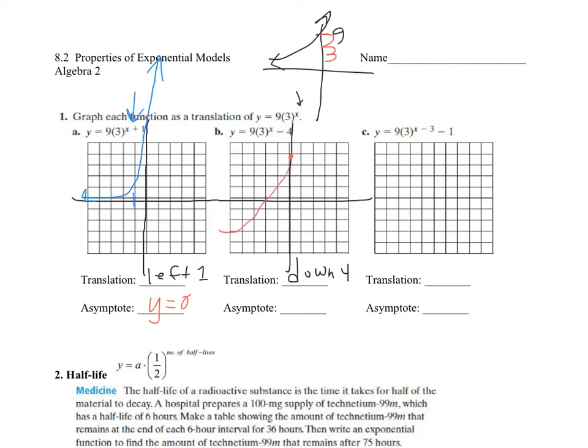And then what's going to happen is, since it moved down 4, if I move down 4 of where my y-intercept was, that means my asymptote line is going to move down 4. Before my asymptote was y equals 0, so now my new asymptote is going to be y equals negative 4.